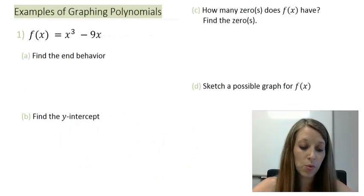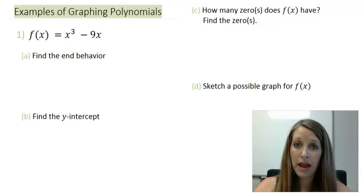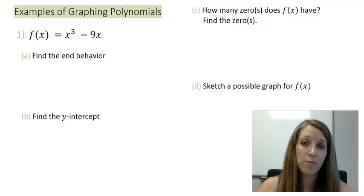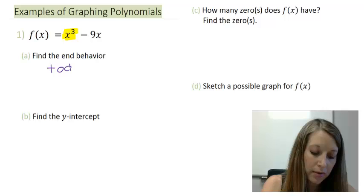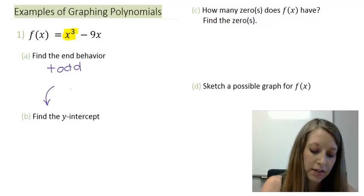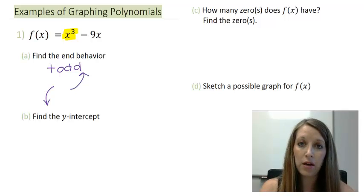Let's start with the first one. f(x) = x³ - 9x. Now let's start by finding the end behavior and eventually we'll put this on the graph. My end behavior comes from my leading term, the one with the highest degree or the highest exponent. That's my leading term there. This happens to be a positive odd, which means it's going to start down on the left and it's going to end up on the right.